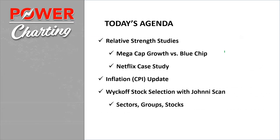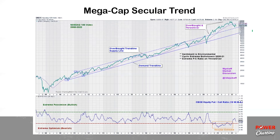We're going to look at mega cap growth in the form of the NASDAQ 100, the blue chip stocks looking at the Dow Jones Industrials, and then a mini case study in Netflix because of the important break it had yesterday. Netflix is one of the FANG stocks — a very dominant, predominant stock in the NASDAQ 100, so it's an important proxy for us to look at. Very brief update on inflation, and then Wyckoff Stock Selection with Dr. Scan.